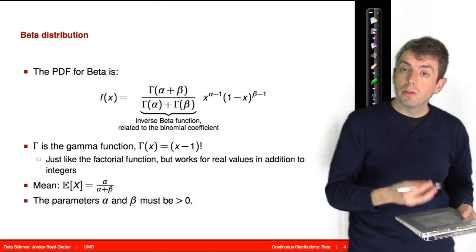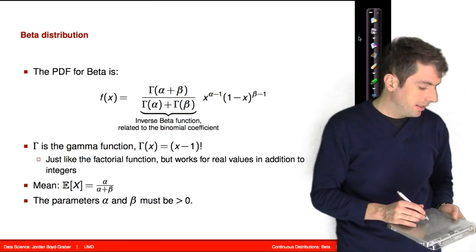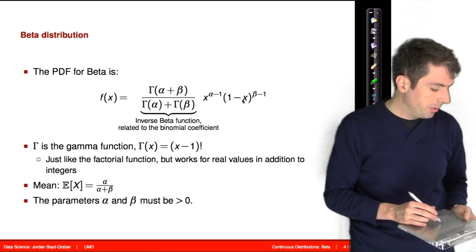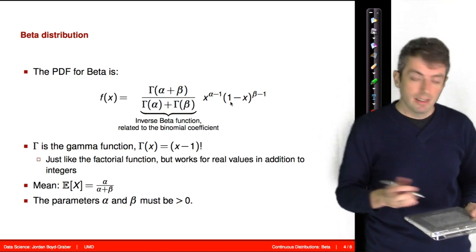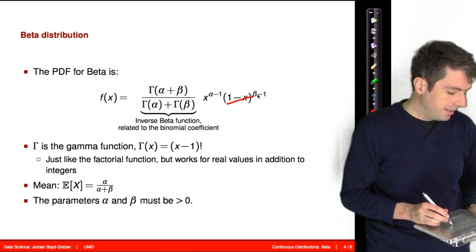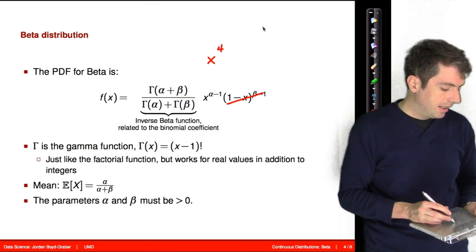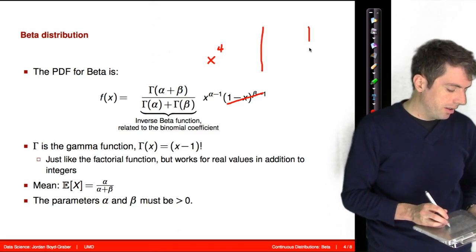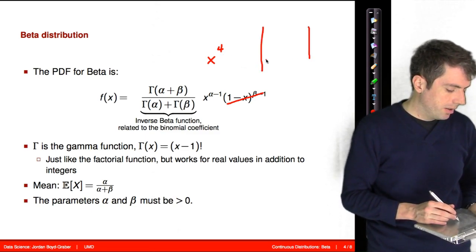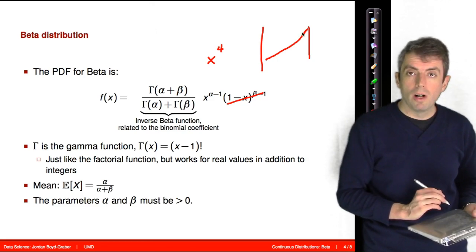When beta or alpha are equal to 1, we get special cases. For example, with the blue line where beta is equal to 1 and alpha is equal to 5, we basically have x to the fourth, and so you get a curve that goes up sharply and peaks at 1.